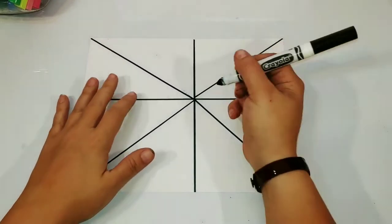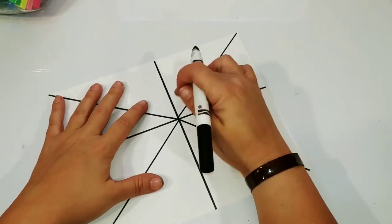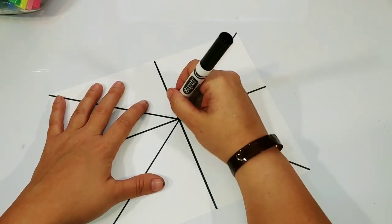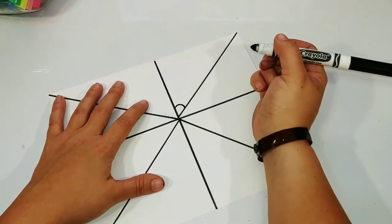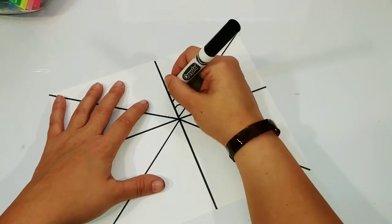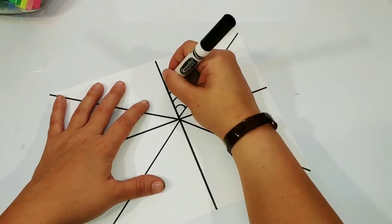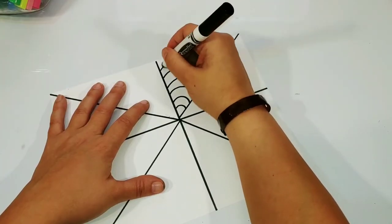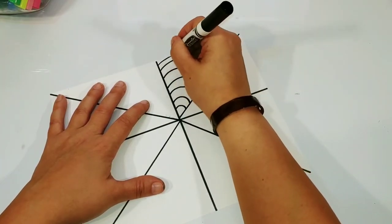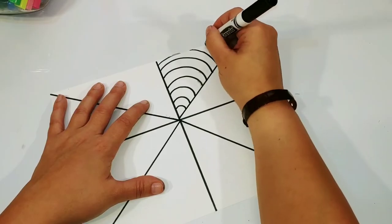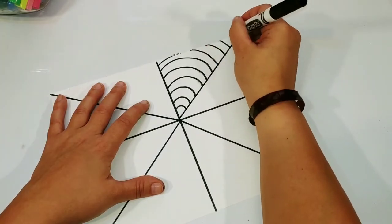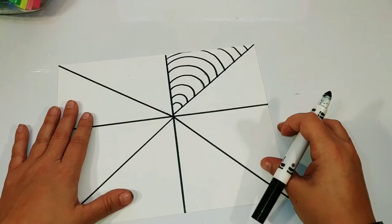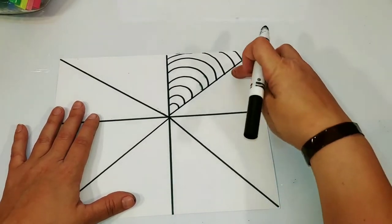So next we're going to pick one of our sections and we're going to kind of make a bump and we're going to connect both of the lines. So from one line to the other, almost like a rainbow. Now it will go off the paper so we have to imagine where these lines will stop and start.